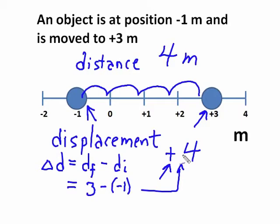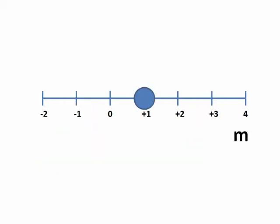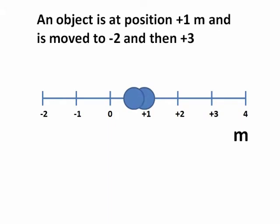Now let's look at another example. This time we have the object at plus one. And it will move to minus two. And then it will move to plus three.